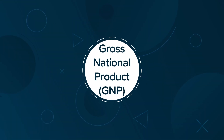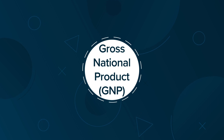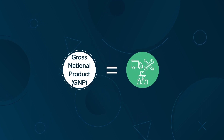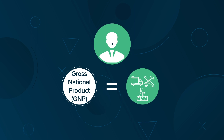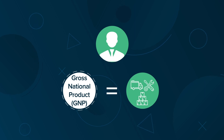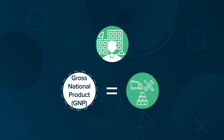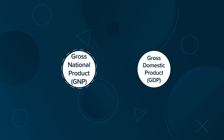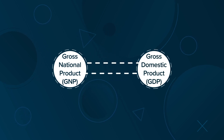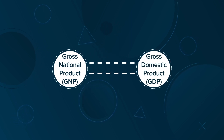A country's gross national product, or GNP, approximates the total value of all goods and services produced by a country's citizens and citizen-owned businesses. Gross national product is closely related to gross domestic product, or GDP.